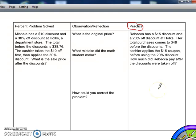Rebecca has a $15 discount and a 20% off discount at Volx. So I'm reading this problem here. Her total purchases comes to $48, and that's before the discounts.